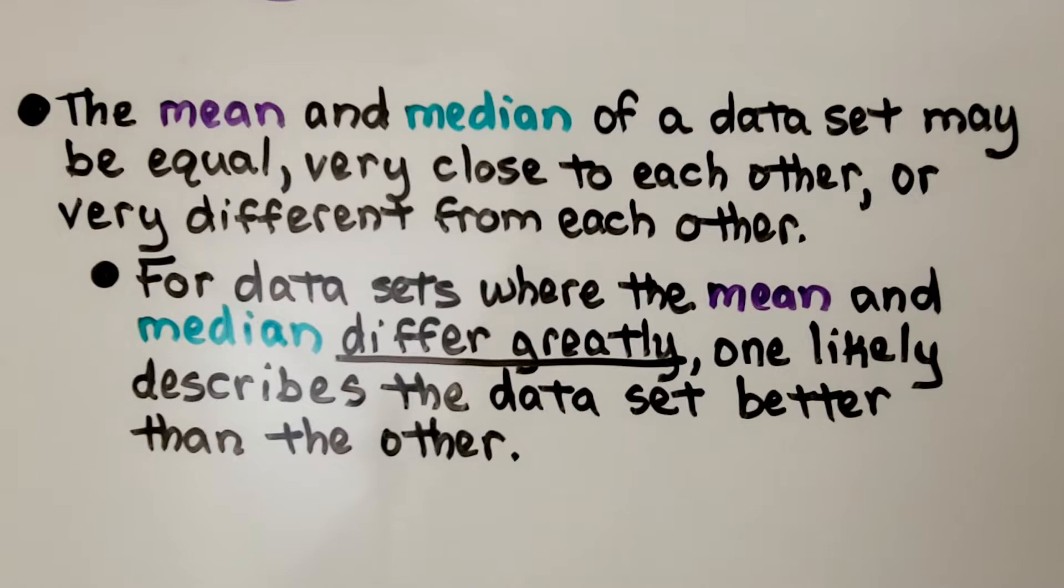The mean and median of a dataset may be equal, very close to each other, or very different from each other. For datasets where the mean and median differ greatly, one likely describes the dataset better than the other.